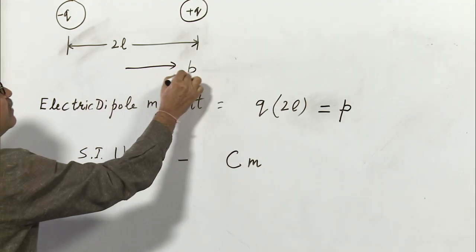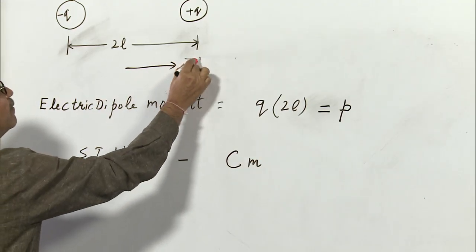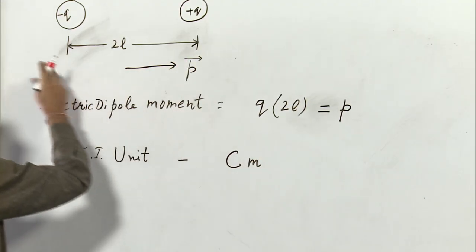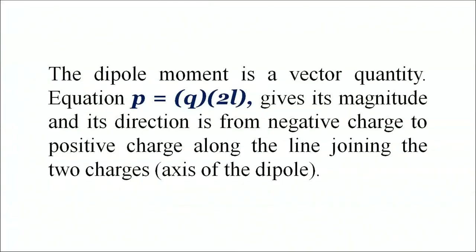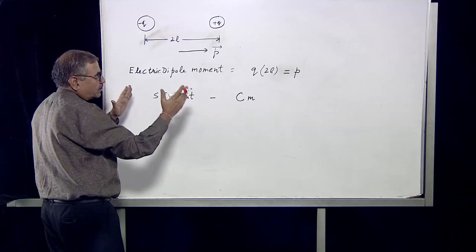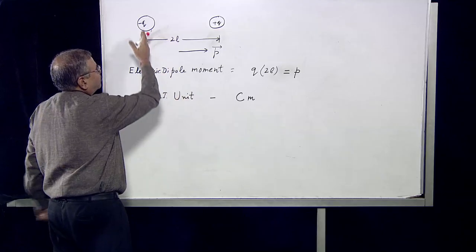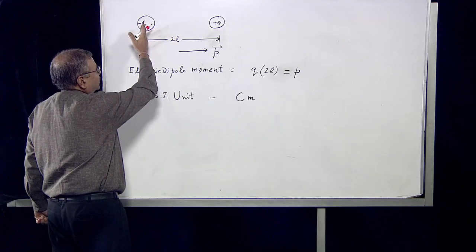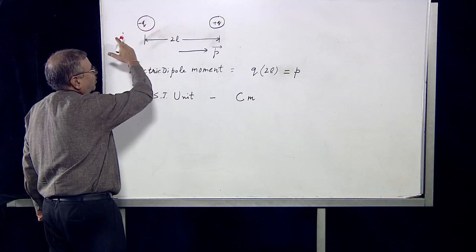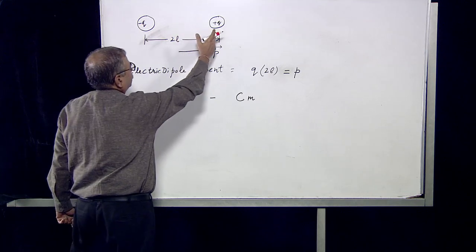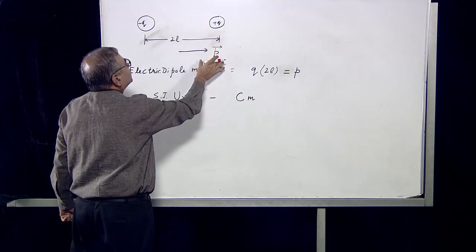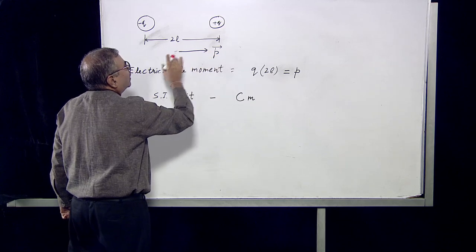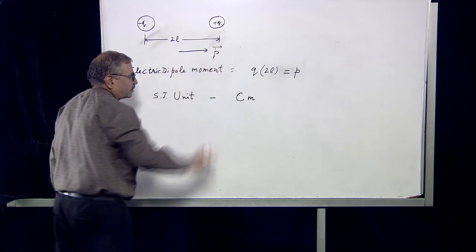In this case, P will be directed from left to right because the charge minus Q is on the left and charge plus Q is on the right, so P is directed from left to right.